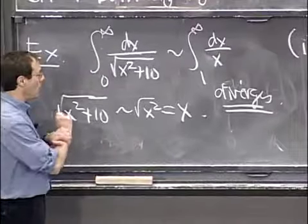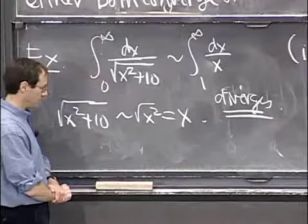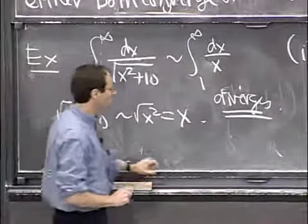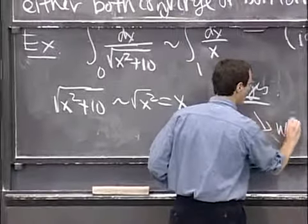The question is, why did we switch from 0 to 1? So I'm going to say a little bit more about that later. But let me just make it a warning here.